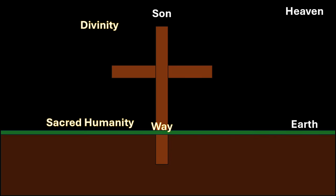Christ's humanity is the way to the divinity. Through his humanity, we encounter the divine person — the Son of God — who is called truth, since he proceeds by intellect. And through the hypostatic union, we are united to divinity, brought to the divine life, and become partakers of the divine nature. So the sacred humanity is the way, the Son of God is the truth, and the divine nature is the life we hope to partake of. And this could be symbolized in the ascent up the cross.